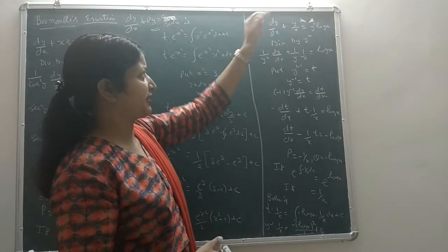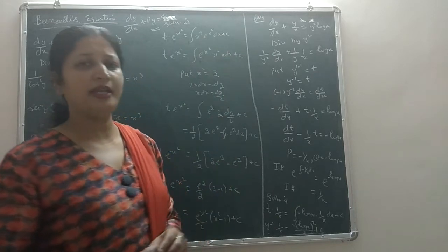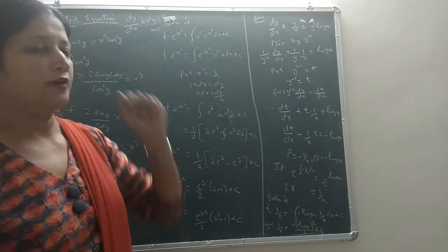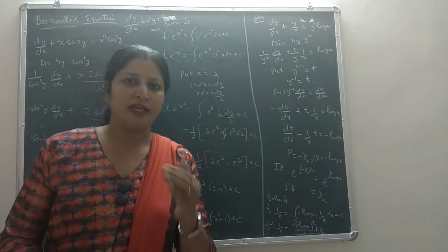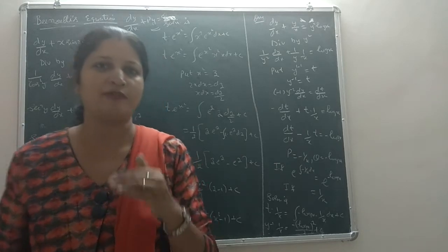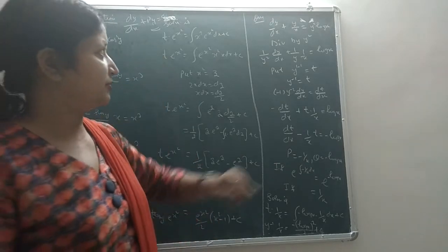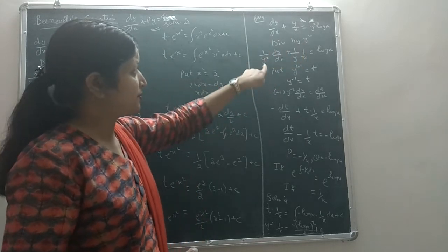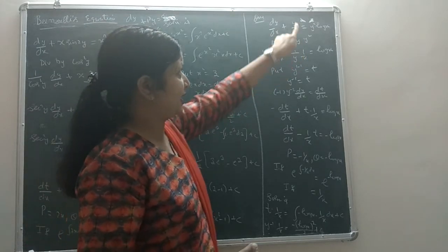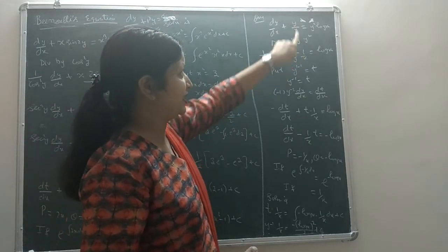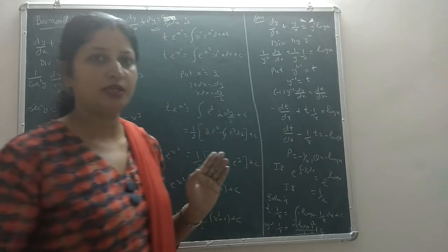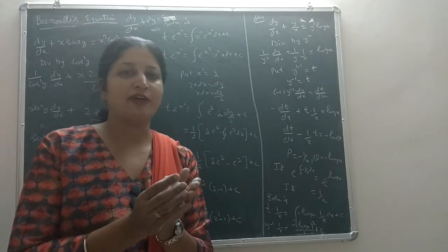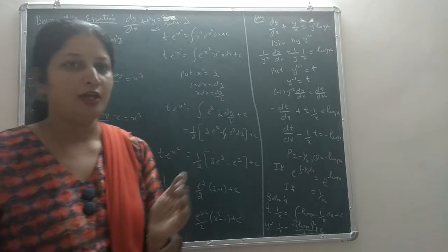The next example: if the question is dy/dx plus y/x equals y²·log(x), then the function of y is y². This means we divide through by y². After dividing by y², the y² term is separated out.